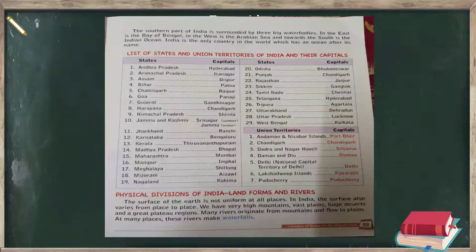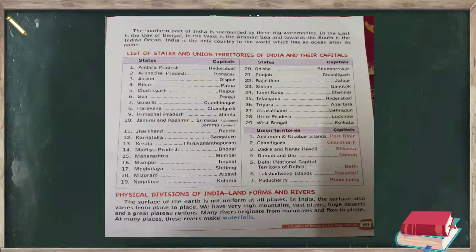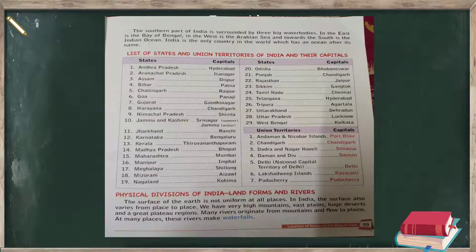Continuing: Sikkim – Gangtok; Tamil Nadu – Chennai; Telangana – Hyderabad; Tripura – Agartala; Uttarakhand – Dehradun; Uttar Pradesh – Lucknow; West Bengal – Kolkata. So in total we have 28 states and their capitals.